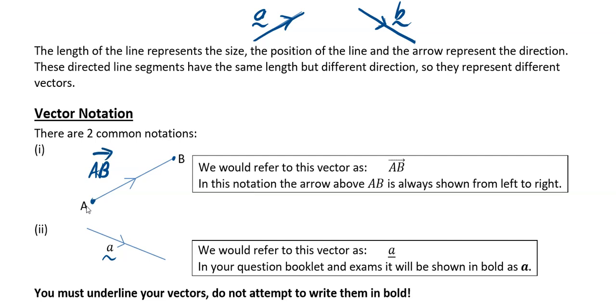If this vector was going from B back to A, this would be the vector BA. The direction is very important.